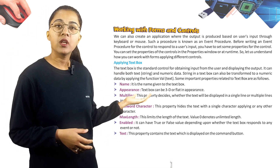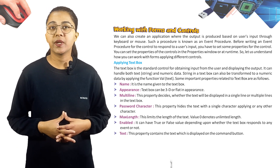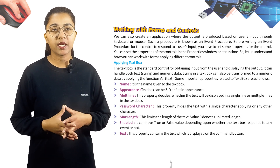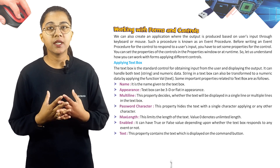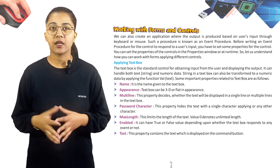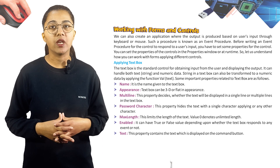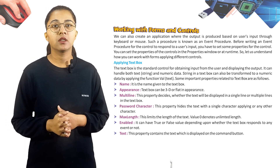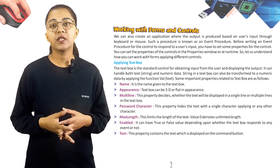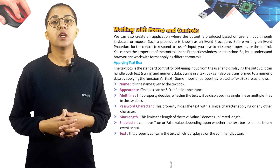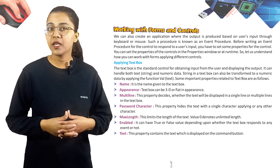MultiLine — decides whether the text will be displayed in a single line or multiple lines. Password Character — hides the text with a single character. MaxLength — limits the length of the text value; zero denotes unlimited length. Enabled — True or False depending on whether the text box responds to events. Text — contains the text displayed on the control.